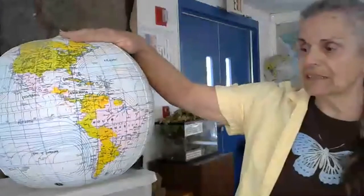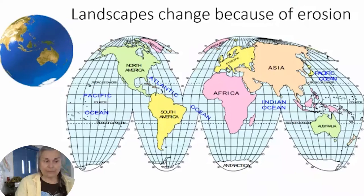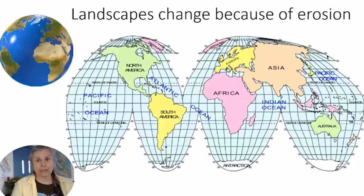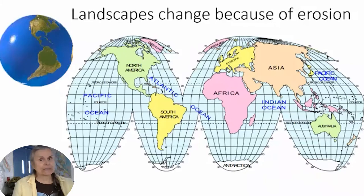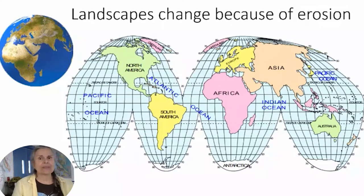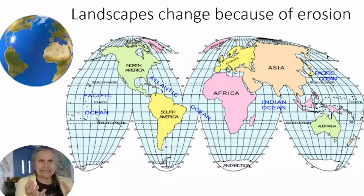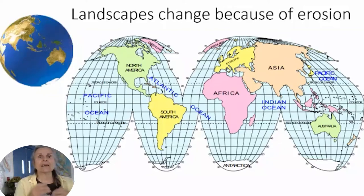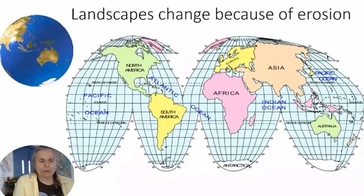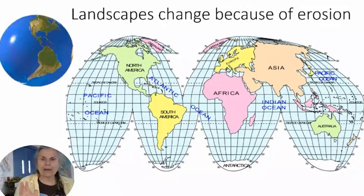Remember, all these maps and globes are kind of flat — they don't show you the relief. When you walk around, you see hills and valleys. Landscapes change because of erosion. Erosion means our earth is like an artist or a sculptor making our landforms into mountains and valleys. Now we're going to figure out how that erosion occurs.